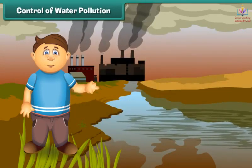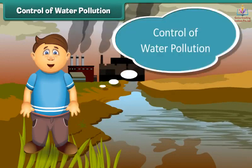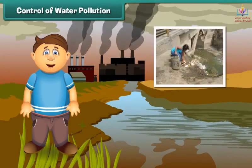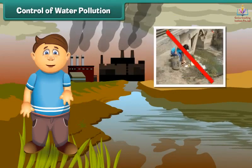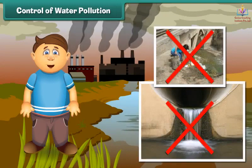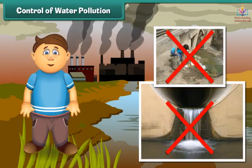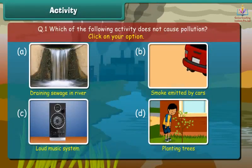Can we control water pollution? The answer is yes. To control water pollution, we should not dispose garbage and harmful chemicals directly into ponds, lakes and rivers. Now it's time to check your understanding. Identify the activity which does not cause pollution.